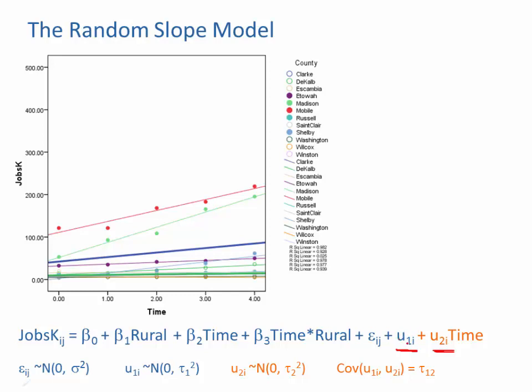These U1s, they're very much set up like a residual term. It's the distance between any individual county's intercept and the overall intercept for counties of that type. So since we've included rural, we've accounted for the fact that rural and non-rural counties are different. Each U, these distances, are the distances to the appropriate type of county.